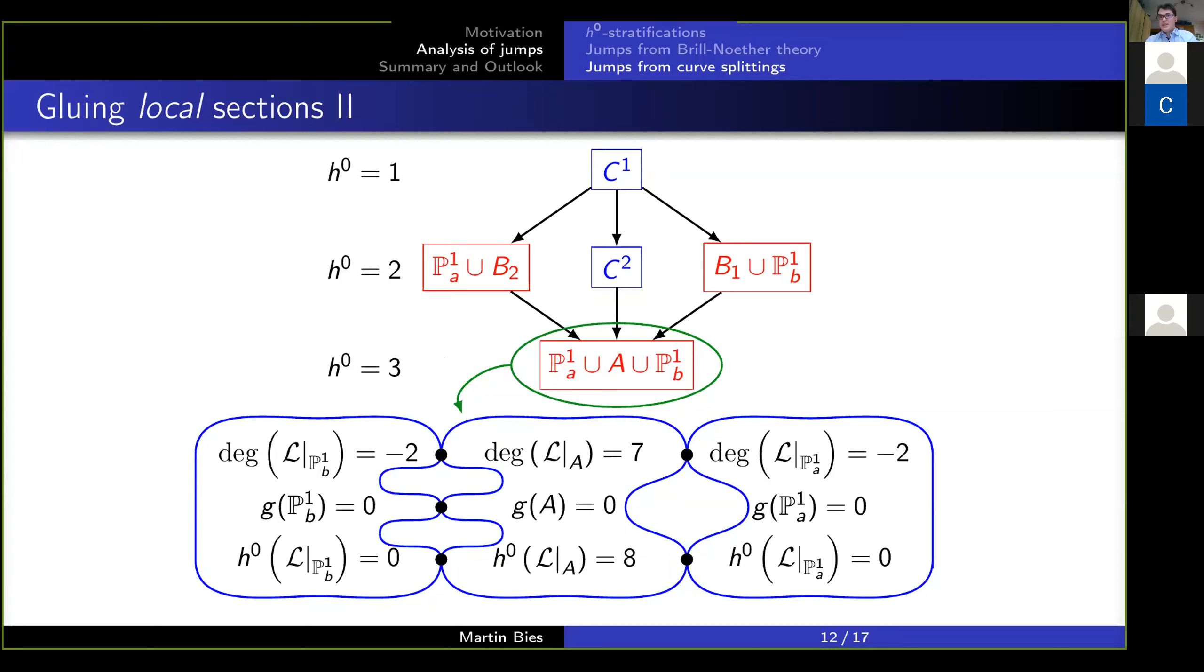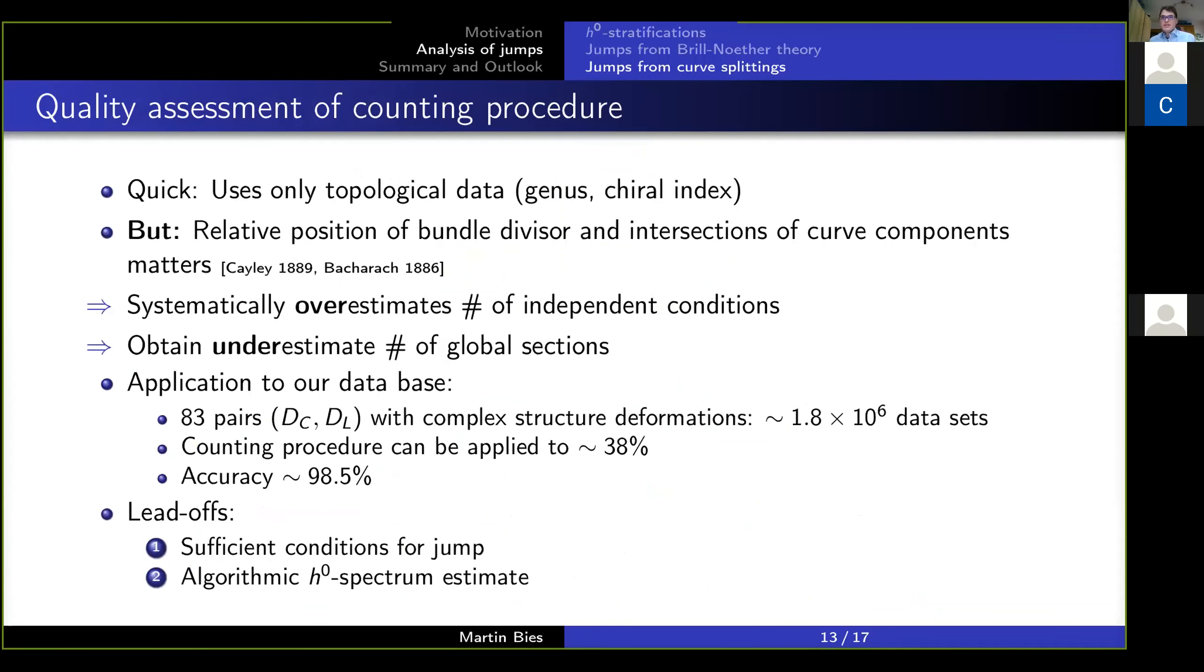So what I'm now pushing here is can we actually extend this simple counting procedure that I'm describing here to more systematically estimate the spectrum. And the first thing that I want to point out is that, of course, I'm placing an upper bound on the number of conditions by saying I expect five independent conditions. And the one thing that could happen is that they are not already independent or that some of the functions vanish automatically at these intersection points. So the first thing to note is that if I do this, then I get a systematic overestimate of the number of conditions or differently underestimate of the number of global sections.